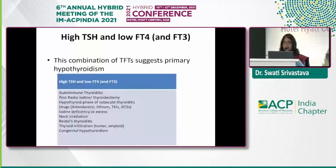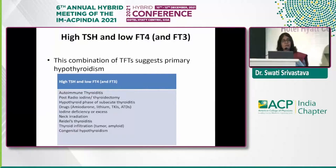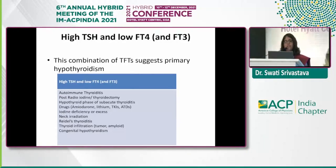The most common TFT pattern is high TSH with low FT4, suggesting primary hypothyroidism. Causes include autoimmune thyroiditis, post-radioiodine therapy, thyroidectomy, the hypothyroid phase of subacute thyroiditis, drugs such as amiodarone, lithium, and tyrosine kinase inhibitors, antithyroid drugs, iodine deficiency or excess (Jod-Basedow phenomenon and Wolff-Chaikoff effect), neck irradiation, thyroid infiltration, and congenital hypothyroidism.